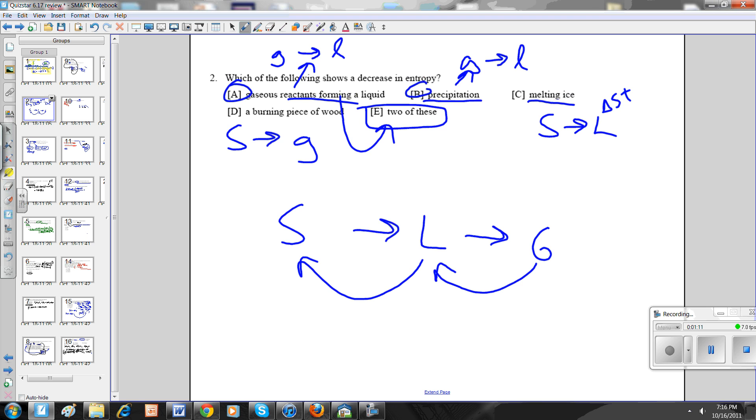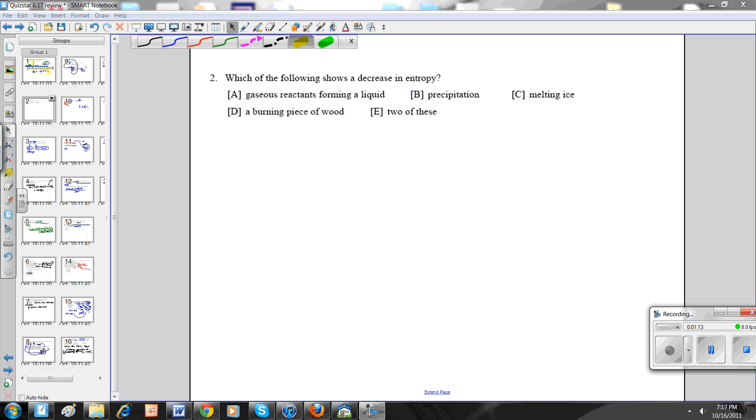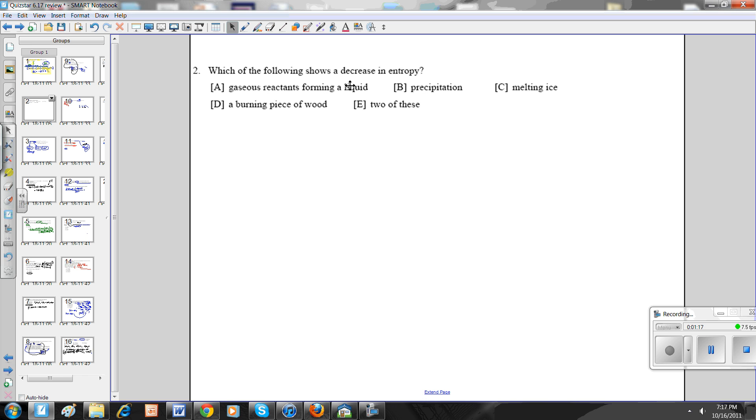Next one. If you look at this one, they ask you about decrease in entropy. What they're asking you about is if you really understand the SLG rule. Remember, SLG, going this way, we say the value for delta S is positive. If you go the other way, the value for delta S is negative.